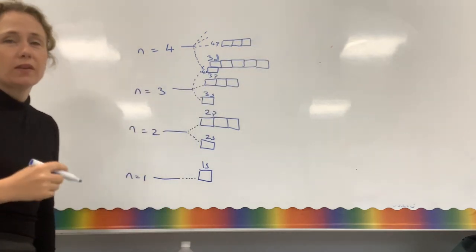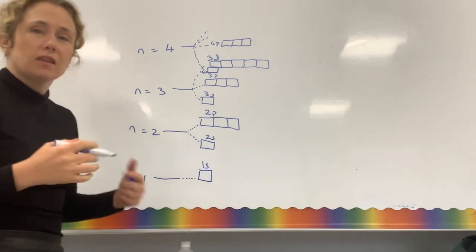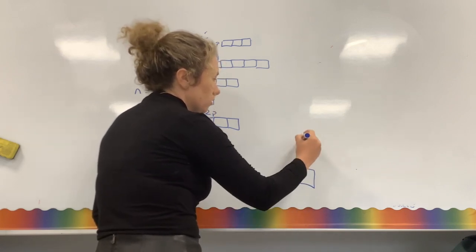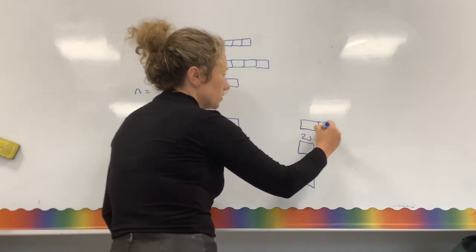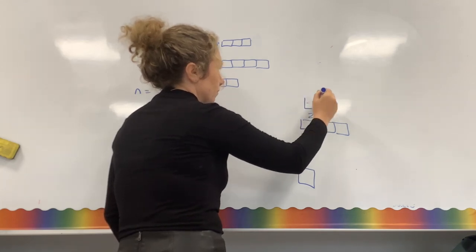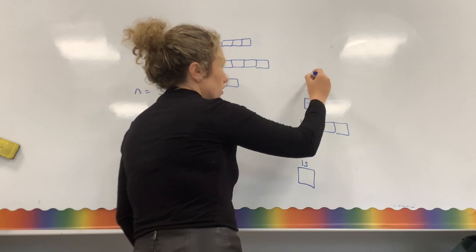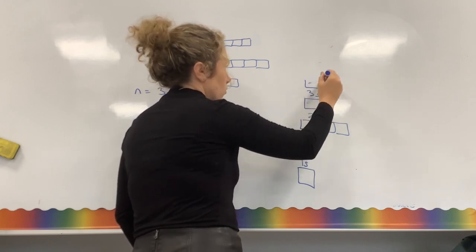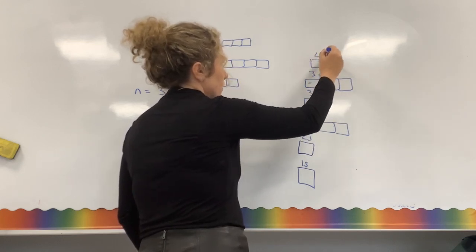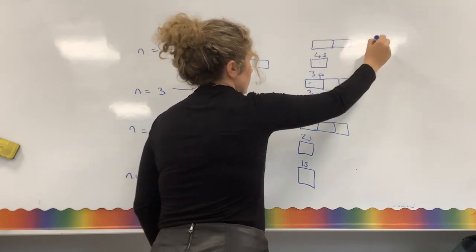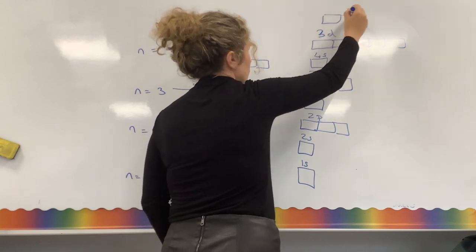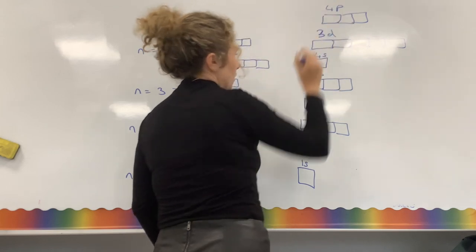If you find that template too hard to draw, you can use the simpler box template. You've got your 1s box, 2s box, 2p box, 3s box, 3p boxes (one, two, three), 4s box, then 3d, and finally 4p (one, two, three). If you just learn their order using this method, that's fine. That's as far as you'll need to go.